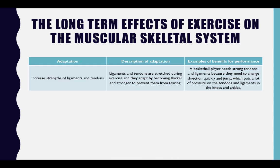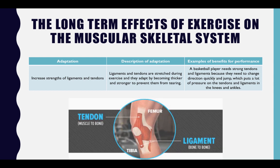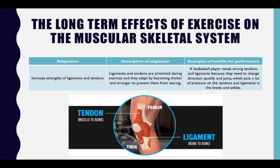Increased Strength of Ligaments and Tendons: Ligaments and tendons are stretched during exercise and they adapt by becoming thicker and stronger to prevent them from tearing. For example, a basketball player needs strong tendons and ligaments because they need to change direction quickly and jump, which puts a lot of pressure on the tendons and ligaments in the knees and ankles.